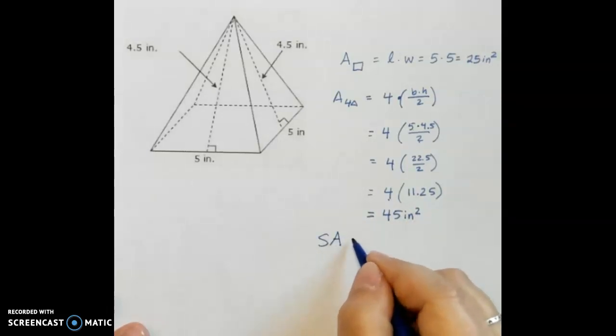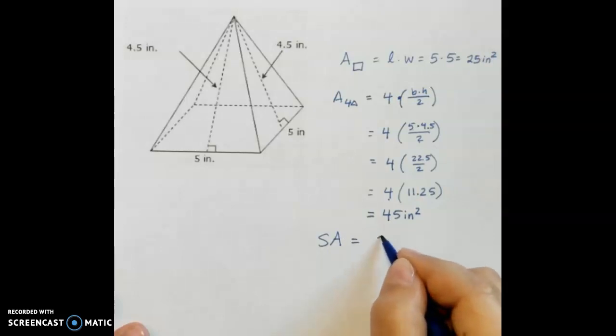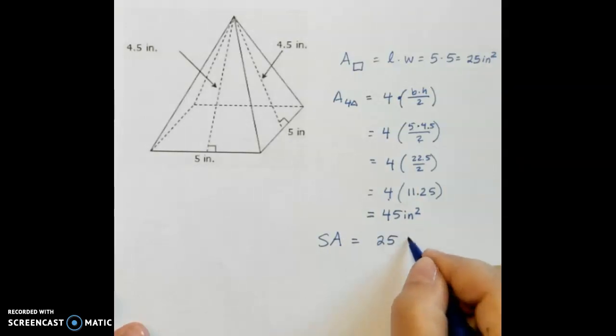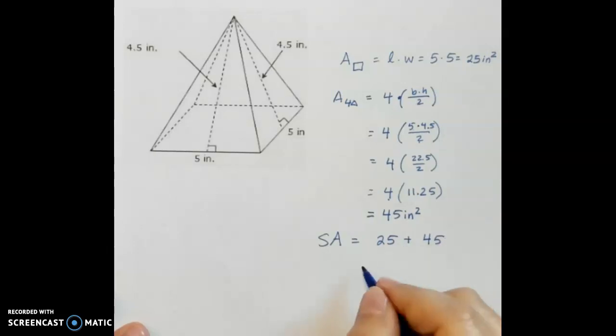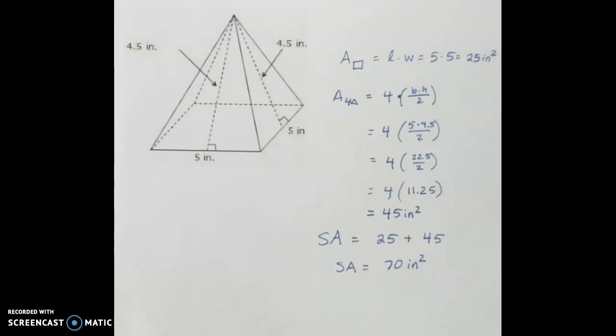Our total surface area then is going to be the area of the base plus the area of the triangular sides, which means our total surface area is equal to 70 square inches. All right friends, I think you guys have enough to get started on today's work. Please check your teacher's homework page to find out what your assignment is. Have a wonderful day!